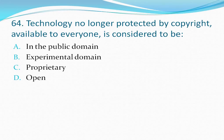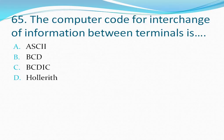Question number 64: Technology no longer protected by copyright, available to everyone, is considered to be — option A in the public domain, option B experimental domain, option C proprietary, option D open. The correct answer is option C — proprietary.